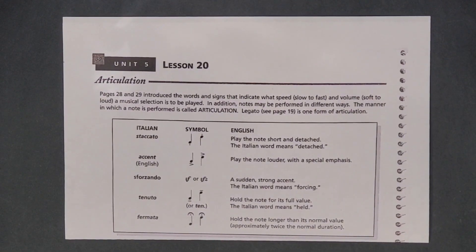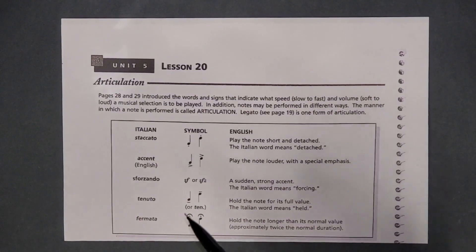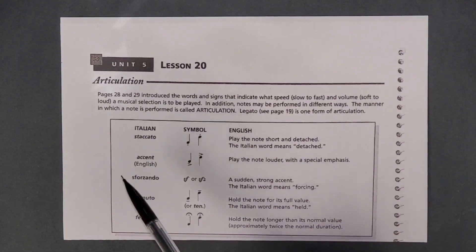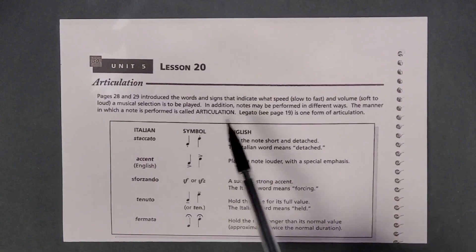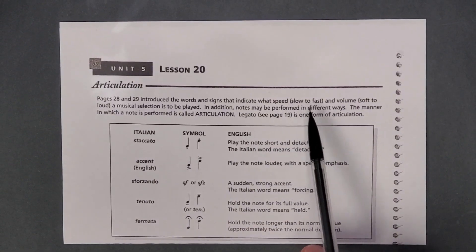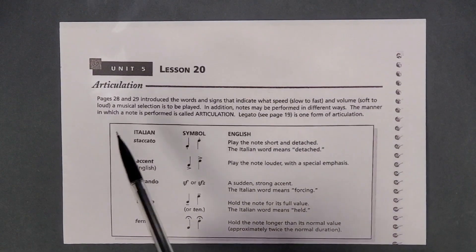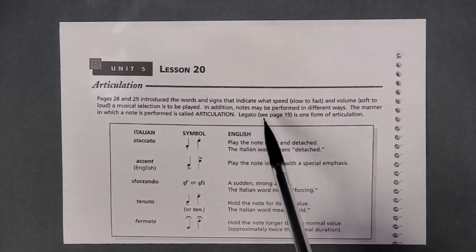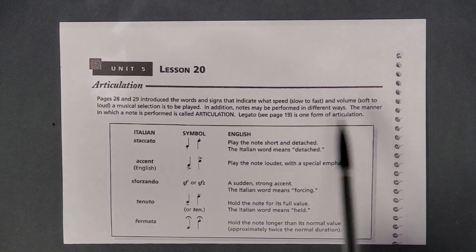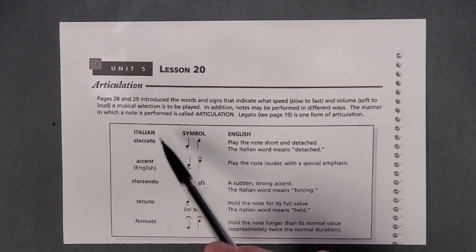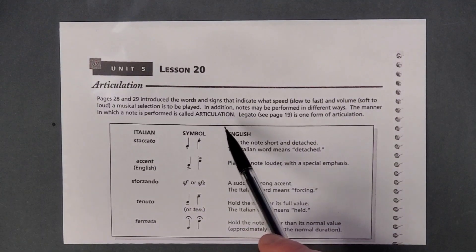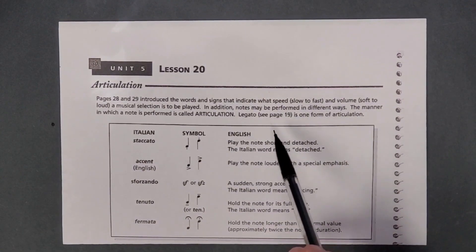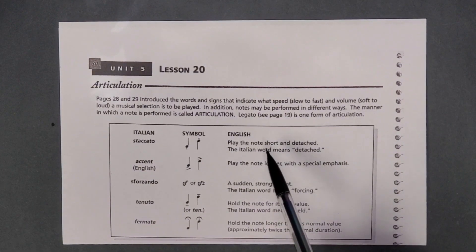Today we're talking about articulation in Lesson 20. The previous pages, 28 and 29, introduced the words and signs that indicate what speed, slow to fast, and volume, soft to loud, a musical selection is to be played. In addition, notes may be performed in different ways. The manner in which a note is performed is called articulation. Legato, see page 19, is one form of articulation.